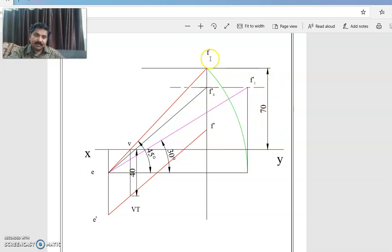EF is the top view. Now what about end E for drawing the front view? End E is below HP is given, but how much below it is not given.